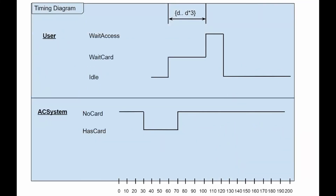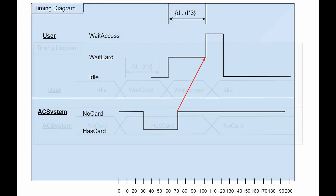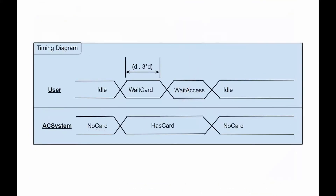State and value lifelines can be stacked together in any combination. Messages can be transmitted from one lifeline to another. Each state or value transition can have a certain time-limited event, which indicates when it should happen, and a duration constraint that indicates how long the object will be in that state or will be affected by the certain values.